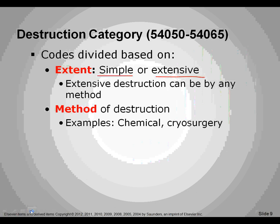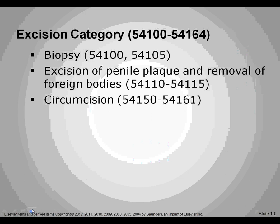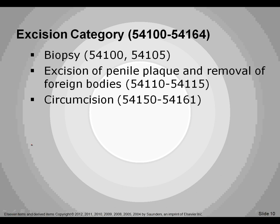Biopsies can be done in any portion of the body. We also have some information about the male genitalia here, such as excision of penile plaque and removal of foreign bodies. We are now going into the male side of the reproductive system. We also have circumcision, which is also an excision — the word circum means circular, referring to removing the foreskin or a portion of the foreskin from around the penis. Circumcisions can be coded based on the method, whether a clamp or surgical excision is used, and there is also a code for whether the patient is a newborn or not a newborn.